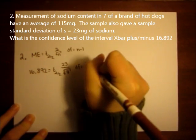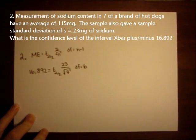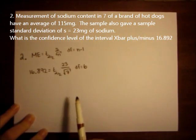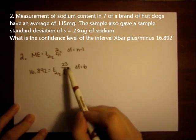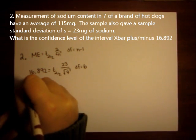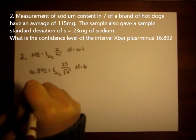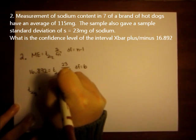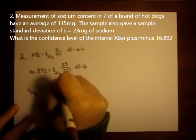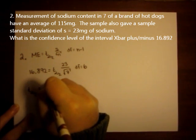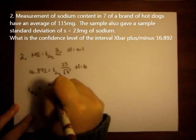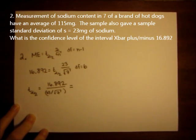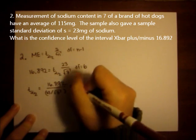So that means our degrees of freedom is n minus 1 or 6. To solve for t alpha over 2, I can divide both sides of the equation by 23 over square root of 7. So t alpha over 2 is 16.892 divided by 23 divided by square root of 7. And when I divide that out, I get 1.943.